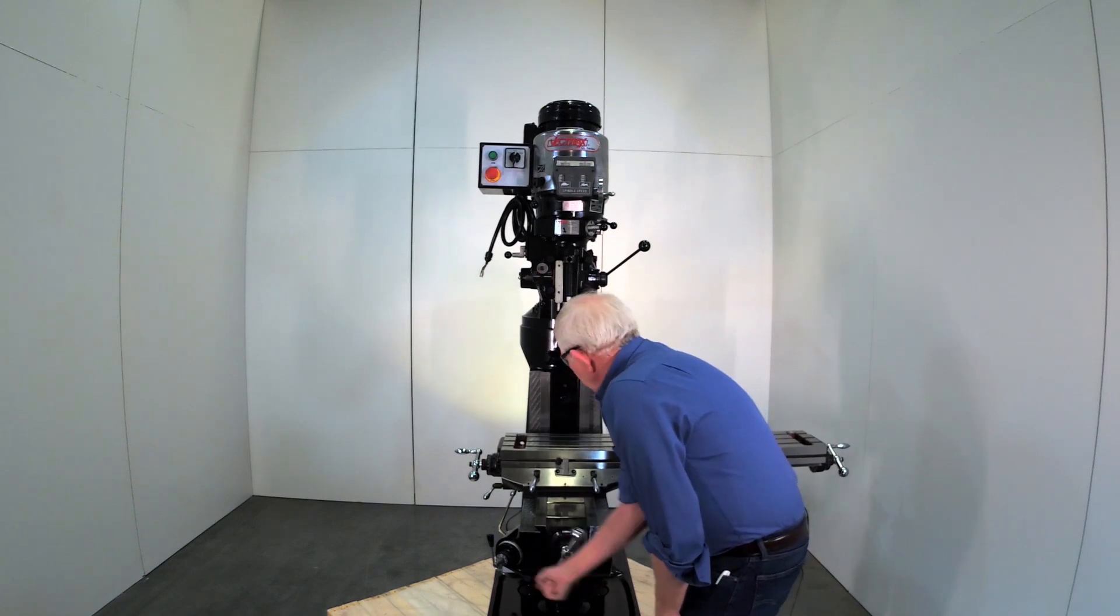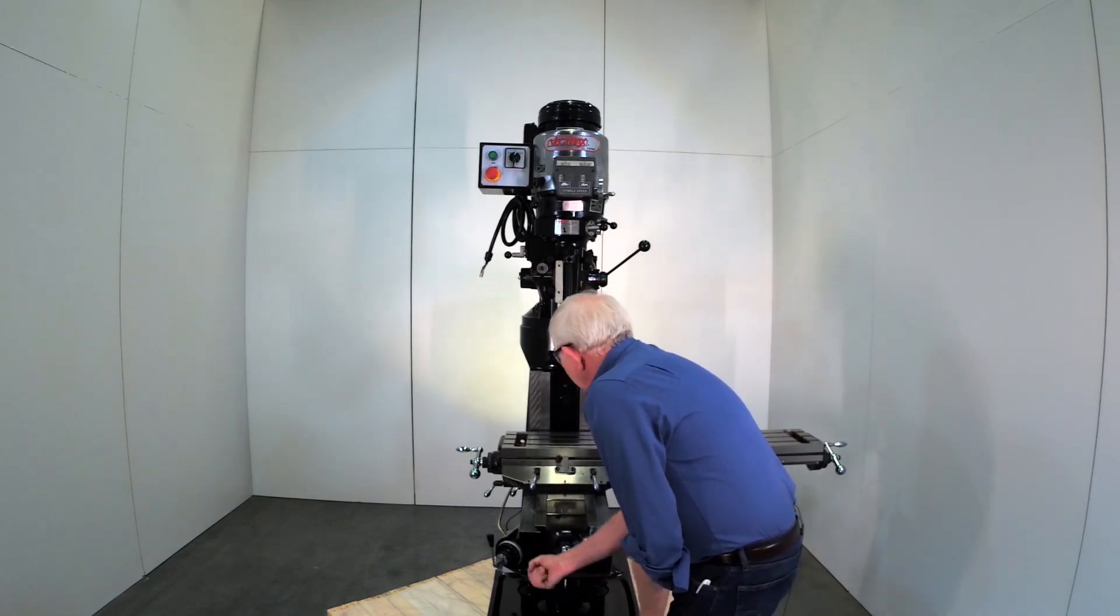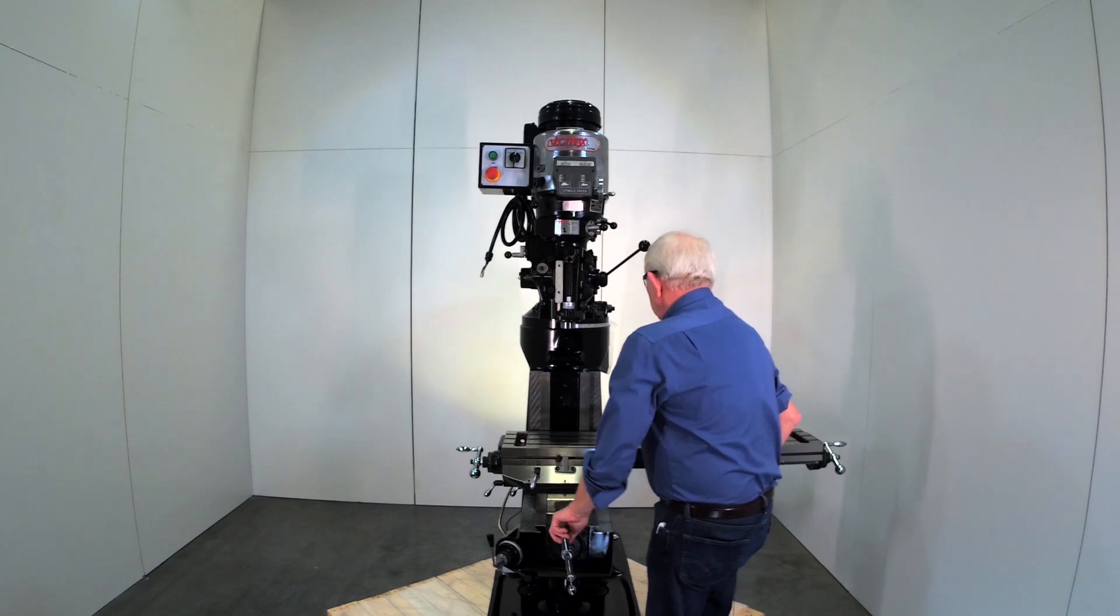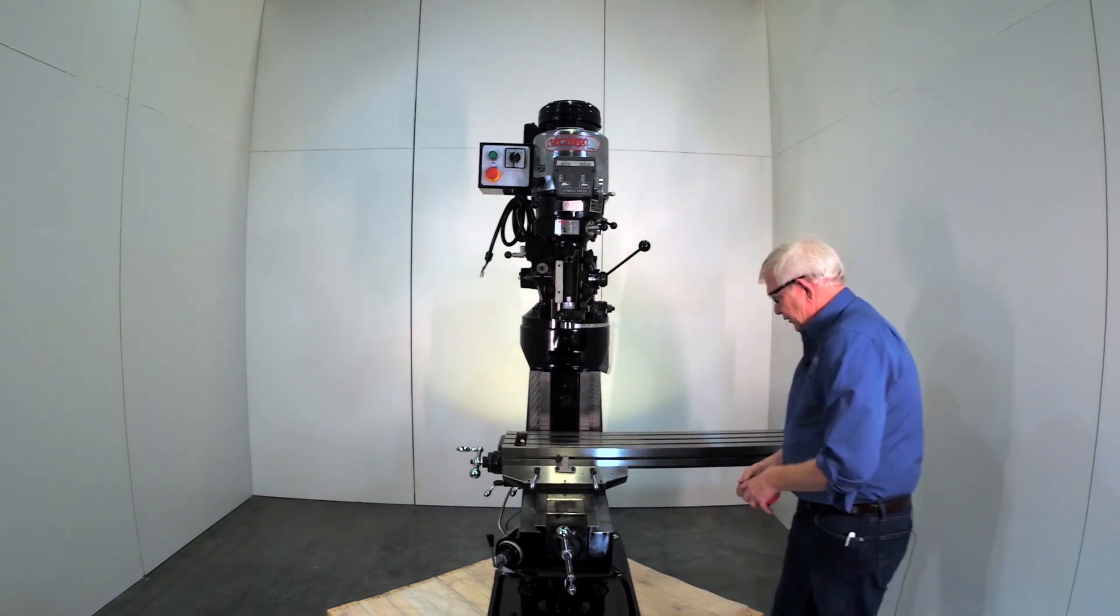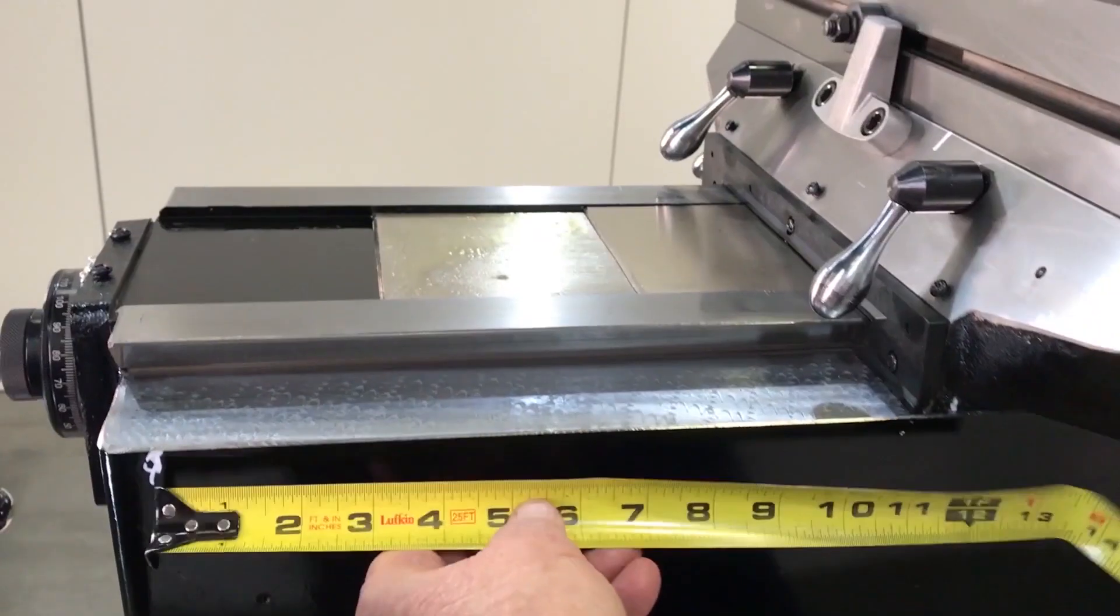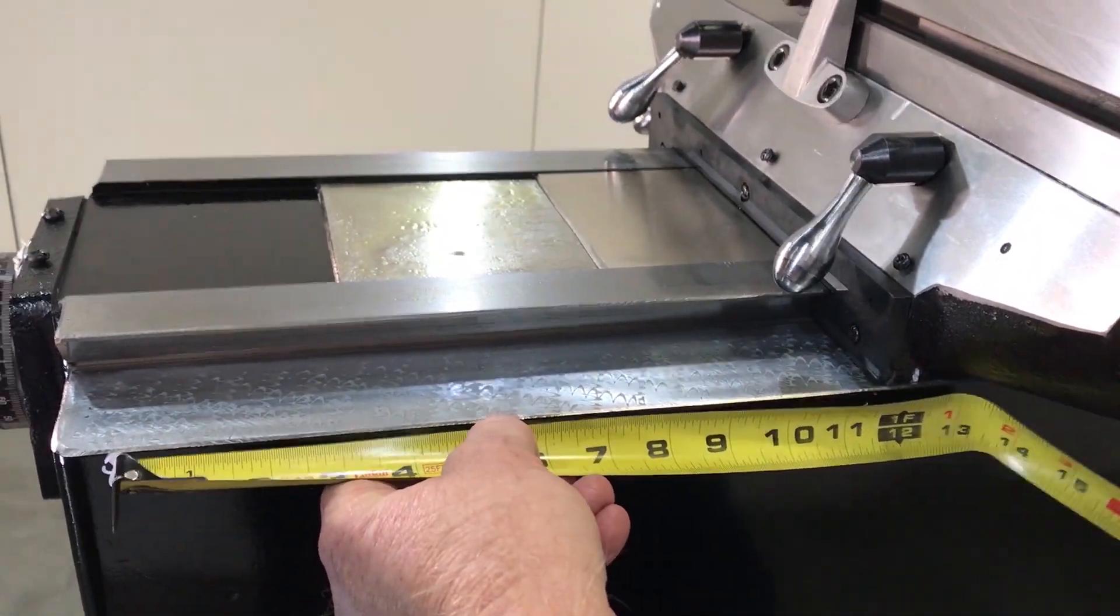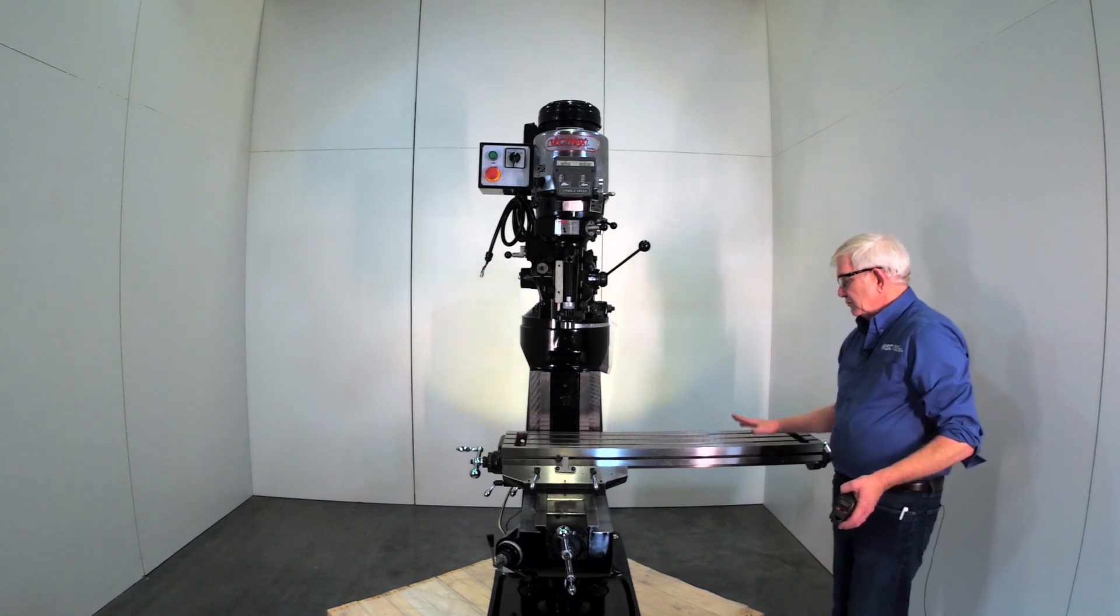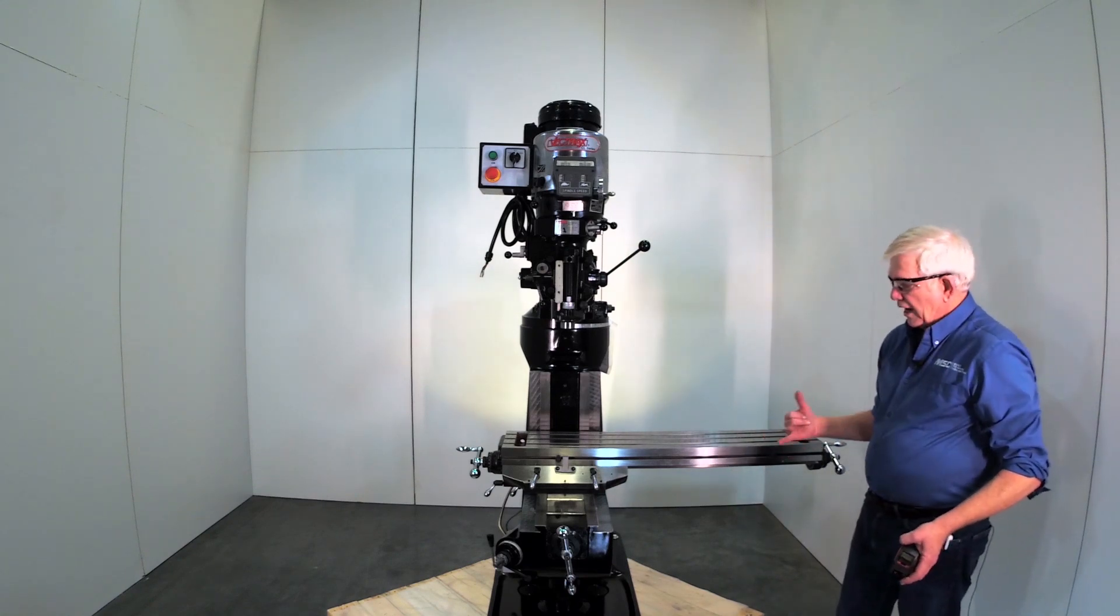Now a power feed on the y-axis is not going to affect your travels whatsoever. All right, so that's fully in the back. I have my witness mark here. And we know that stroke's approximately 12 inches. So x-axis 30, y-axis 12.